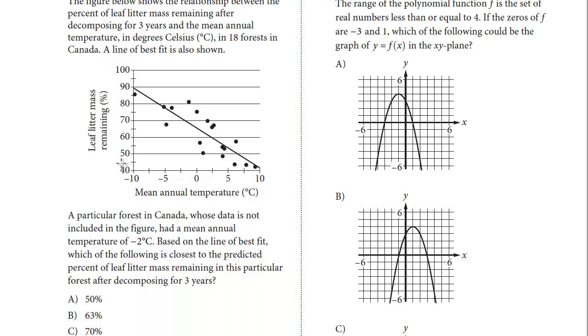So let's take a look. We have on the y-axis leaf litter mass remaining, the temperature, and we see these are the observations. They've drawn a line of best fit, which best represents the data. It's also called a trend line. We know it's got a negative slope.